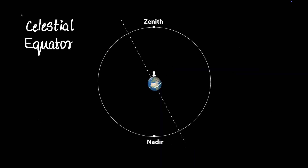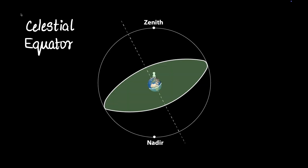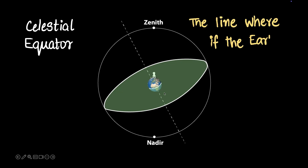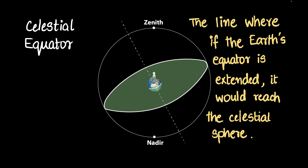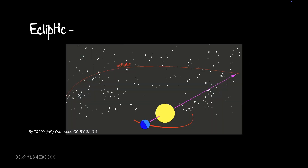Next, we're going to discuss the celestial equator. We have an equator for the Earth, so why not make an equator for the celestial sphere as well? The equator on the celestial sphere is called the celestial equator. The celestial equator is parallel to the Earth's equator, and they lie on the same plane. The line where the Earth's equator, if extended, would reach the celestial sphere — that particular line is called the celestial equator.